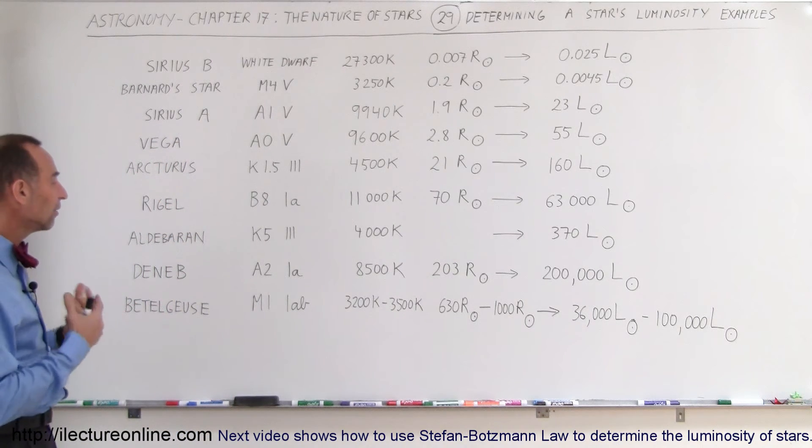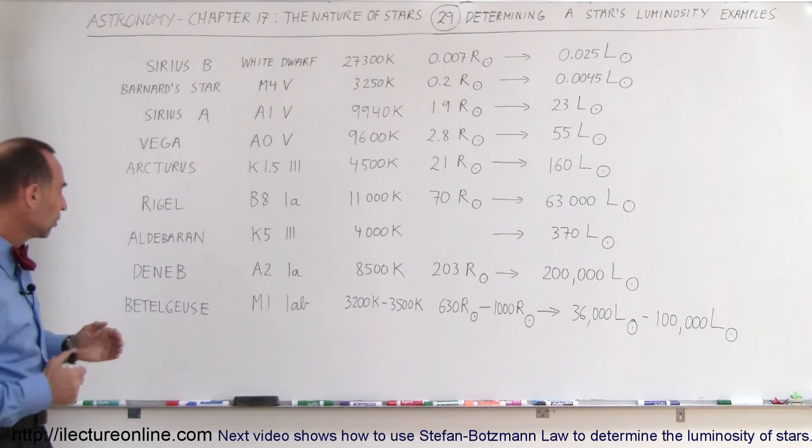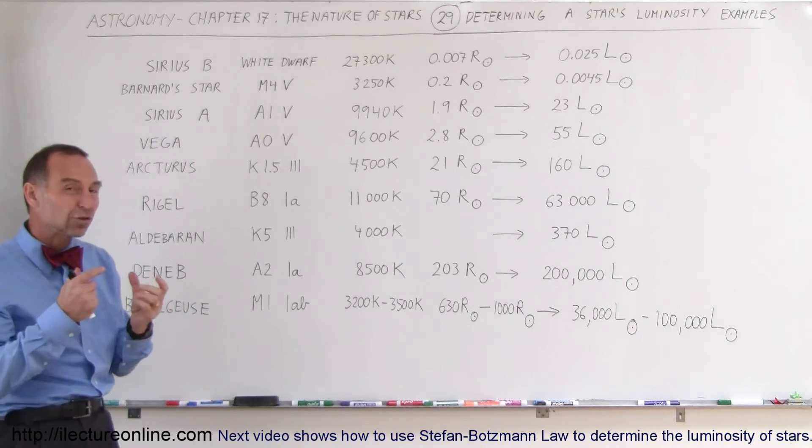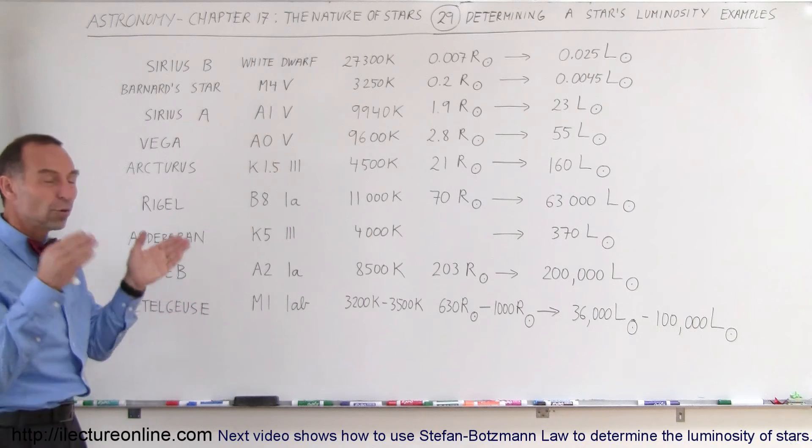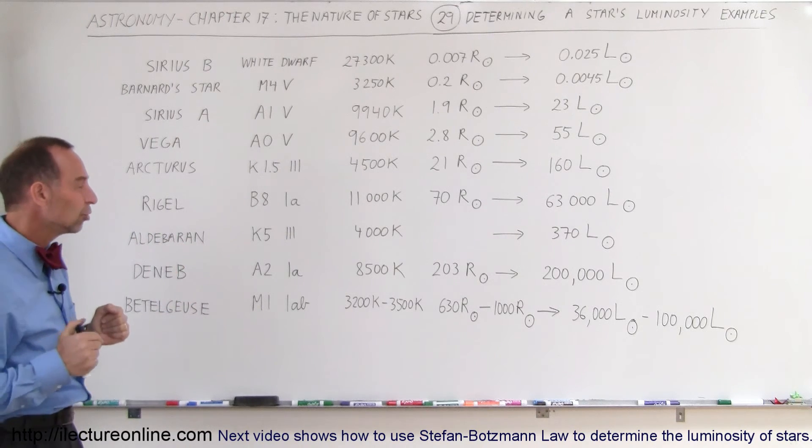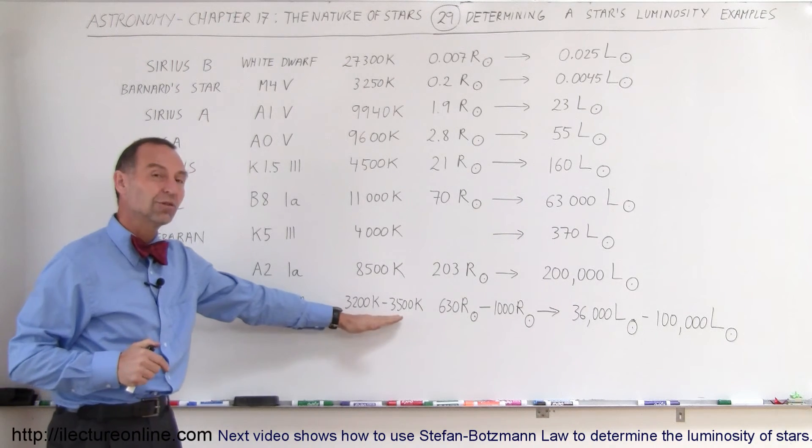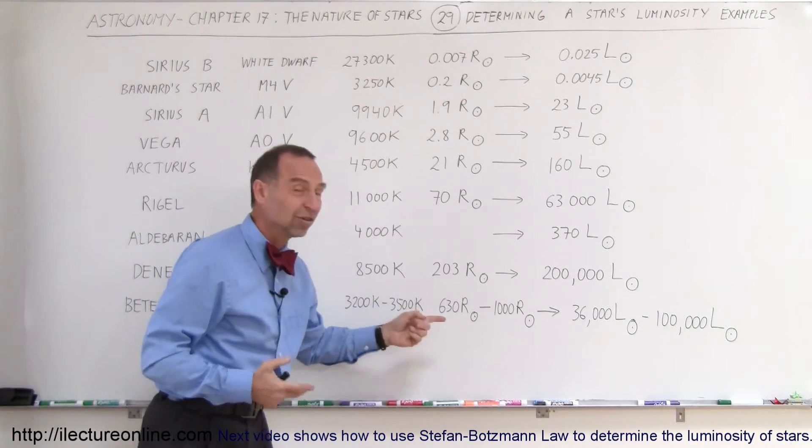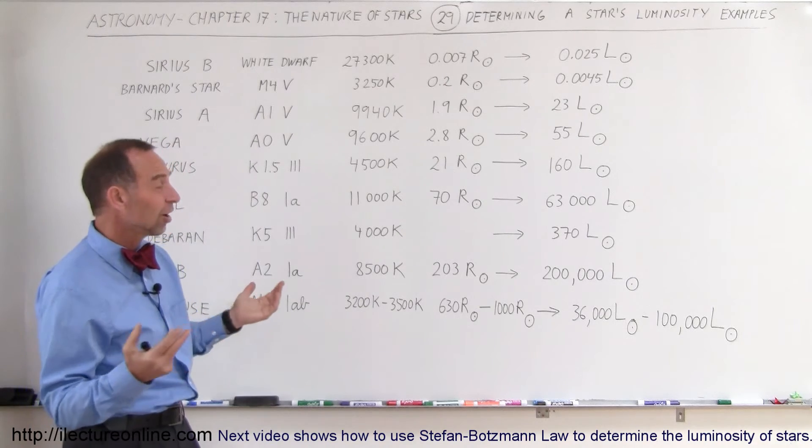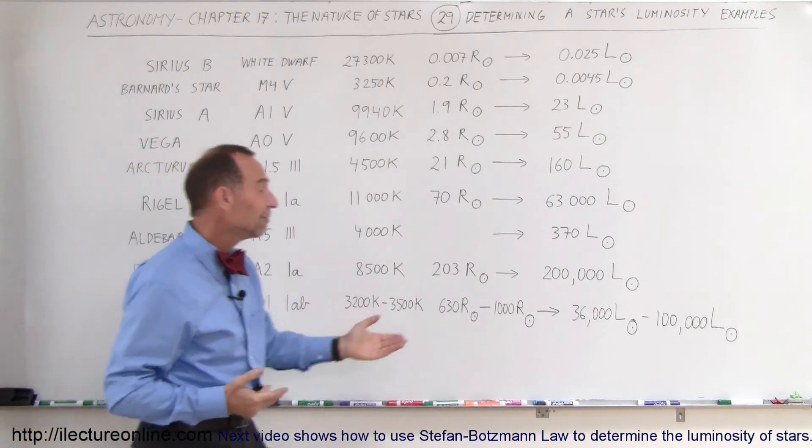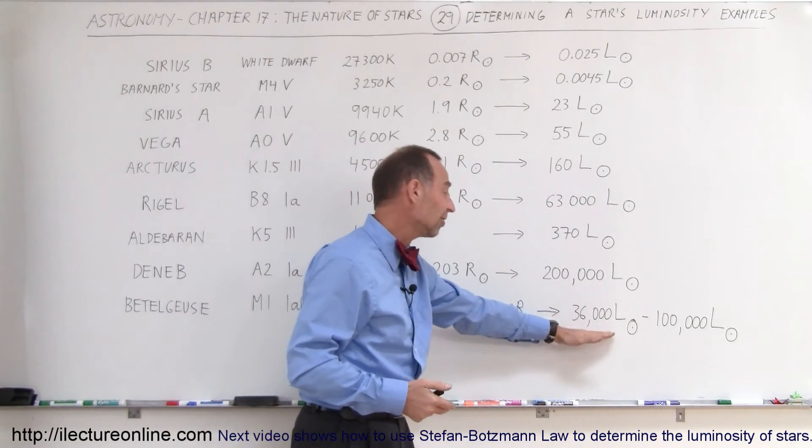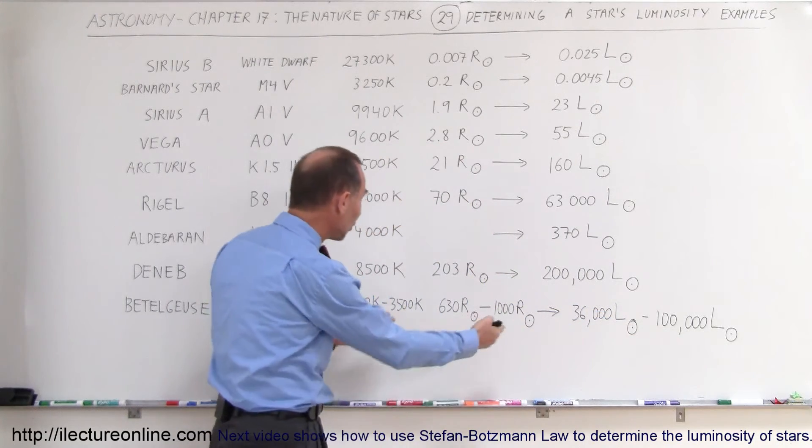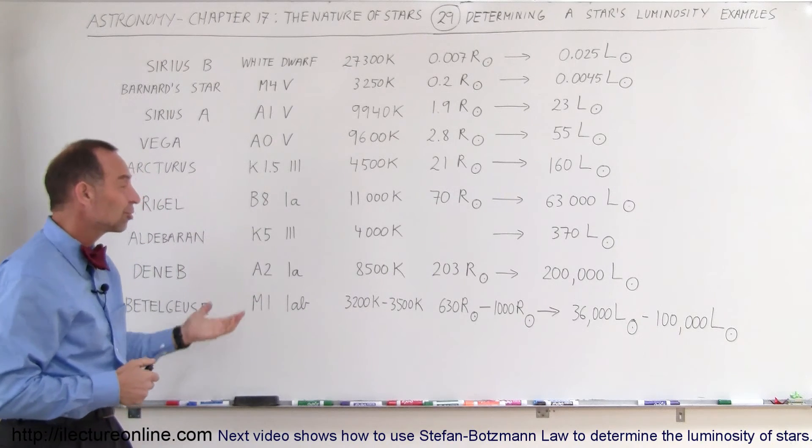And just to give you an example of how difficult it is sometimes to get good measurements, Betelgeuse is a very difficult star to measure. We're still not quite sure what the distance is to Betelgeuse, we're not quite sure what the size of Betelgeuse is, what the surface temperature is for Betelgeuse, and therefore, you can see that we don't have very accurate measurements for the size, since we don't know the distance to the star, and so therefore the luminosity varies anywhere from 36,000 times to 100,000 times the luminosity of the Sun, depending upon which numbers you want to pick and what combination of temperature, size, distance, and so forth you want to grab.